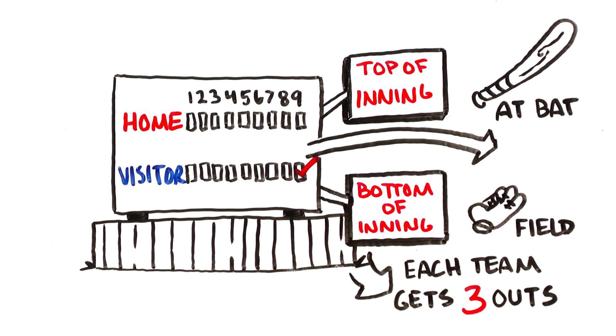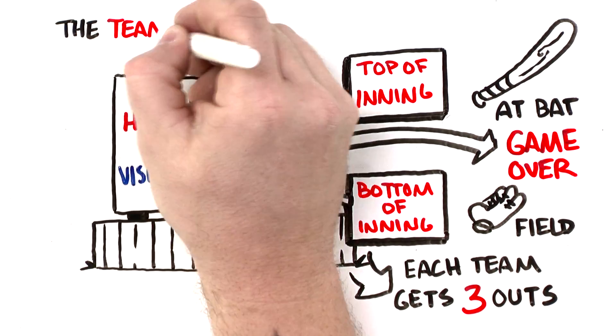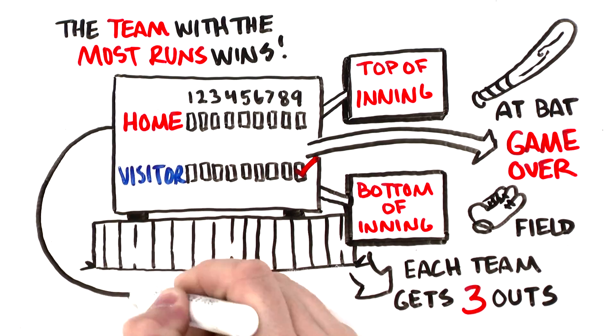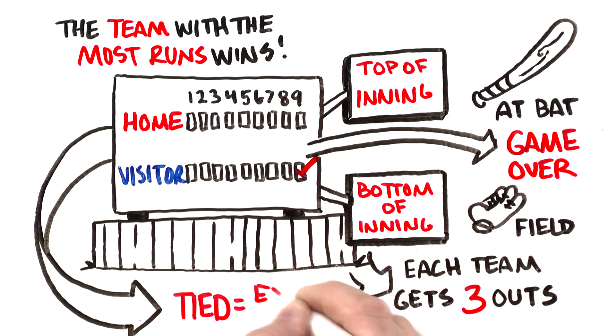After the bottom of the ninth inning is complete, the game is over and the team with the most runs wins. If the game is tied, it can go into extra innings.